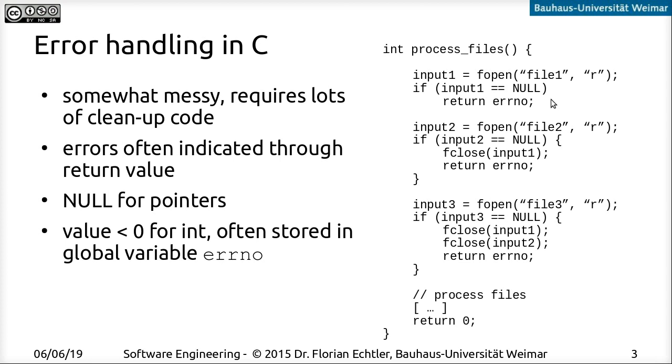Then you can return a global variable which is called error number ERRNO, which contains the last error that was caused by a library function, for example. So this is really quite convoluted. And if you have, if the error occurs on the second file, for example, then you would actually need to take care to clean up the first file again, close it and then return the error and so on.